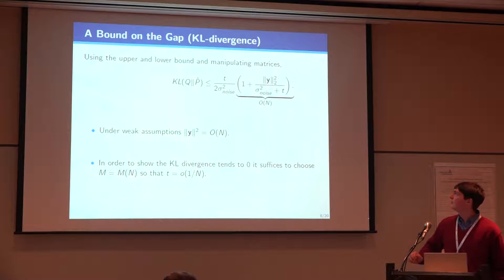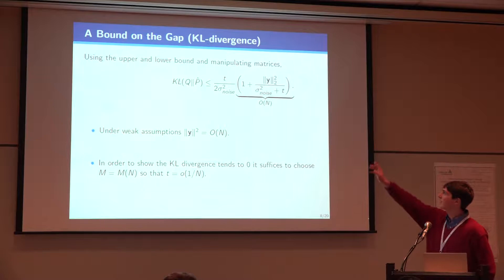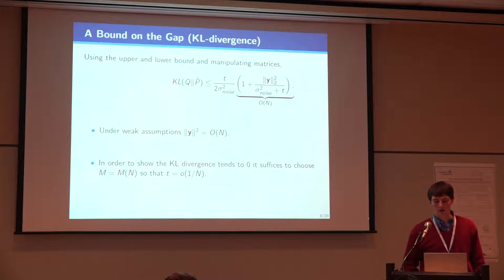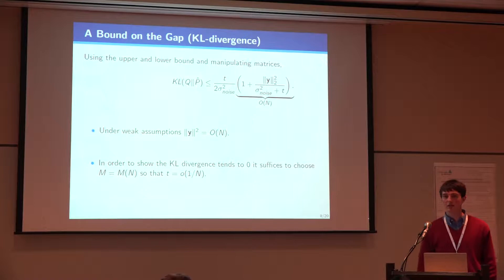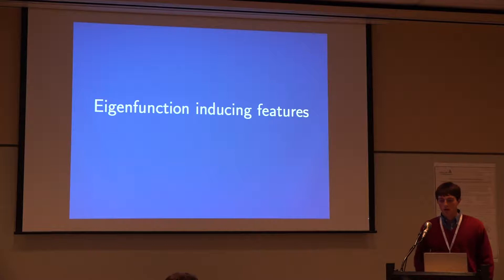If you subtract those two bounds and then manipulate matrices some, you get that the KL divergence is upper bounded by this error in the trace of this matrix, plus this term, which should roughly scale linearly with the amount of data we have, because our observation outputs should scale linearly, assuming that the size of the output isn't getting bigger as we go. So if we want to show that the KL divergence is going to tend to zero as n gets big, we need to pick M as some function of n, so that this error in trace is going to be little o of 1 over n.